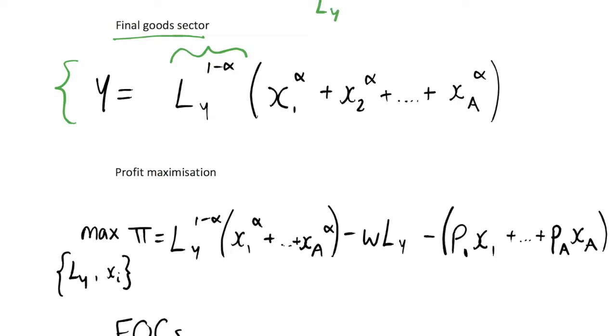So this is labor that is being used in the final goods sector, so the Y is referring to the fact that we're in this sector or that we're producing this output Y, and this is weighted by its share of the income as usual by the power of 1 minus alpha.